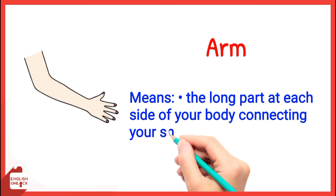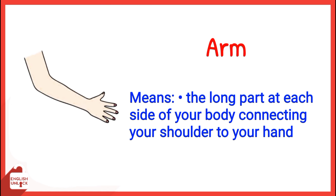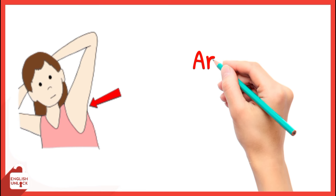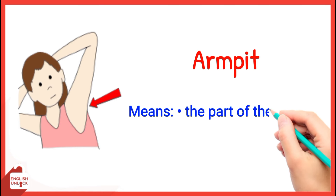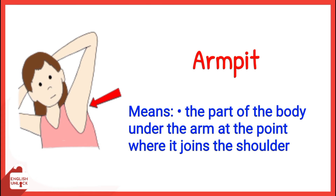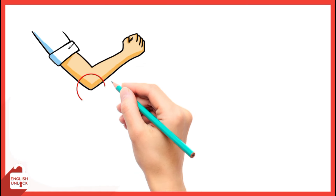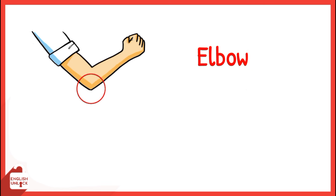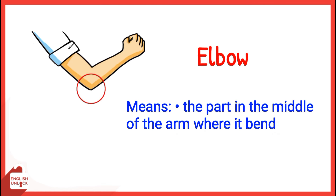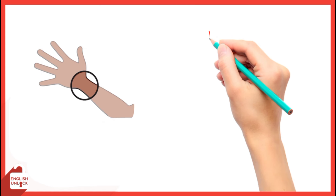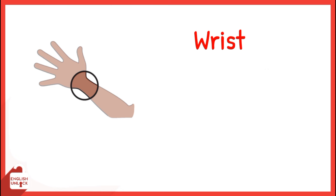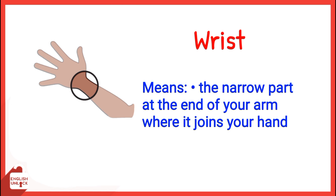Arm means the long part at each side of your body connecting your shoulder to your hand. Armpit means the part of the body under the arm at the point where it joins the shoulder. Elbow means the part in the middle of the arm where it bends. Wrist means the narrow part at the end of your arm where it joins your hand.